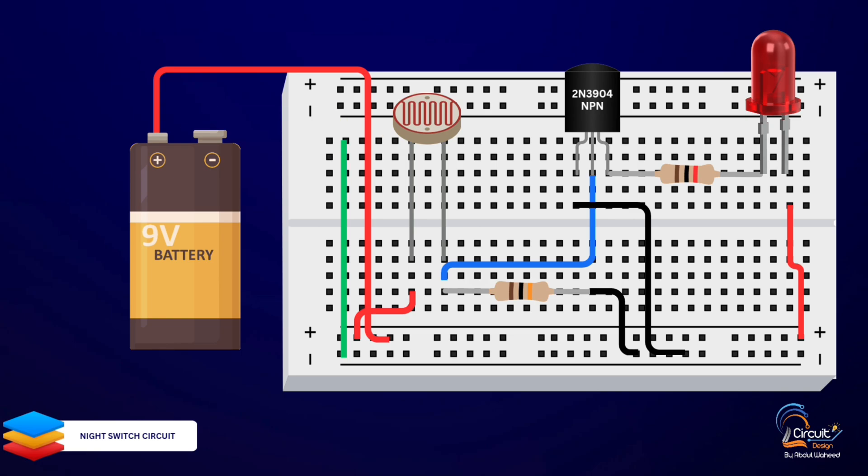When the light level drops, the LDR's resistance increases, turning on the transistor, which in turn lights up the LED.